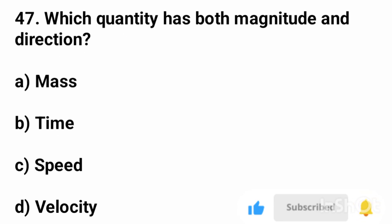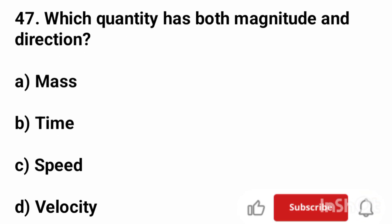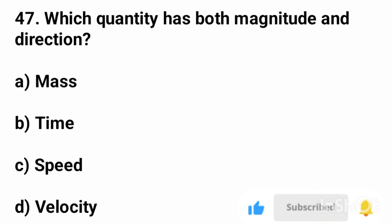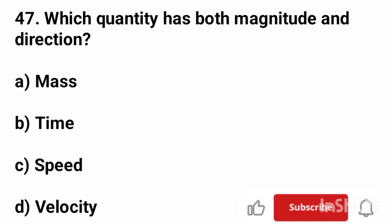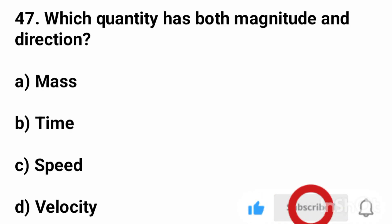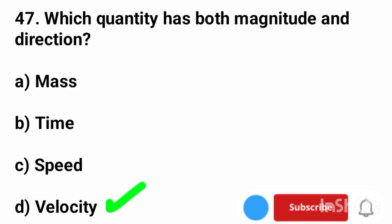Question number 47. Which quantity has both magnitude and direction? The correct answer is option D, velocity.